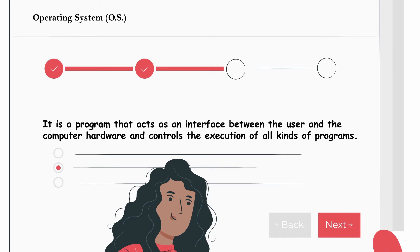What does an operating system do? First of all, it is an interface between the user and the computer hardware. Second, it controls the execution of all kinds of programs. Operating systems are designed to provide an environment in which a user can easily interface with the computer to execute programs with the help of computer hardware — so it is fundamentally an interface.